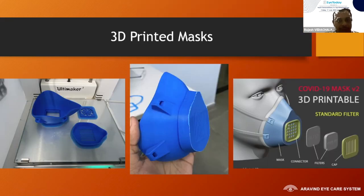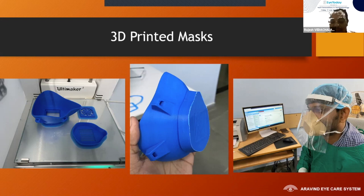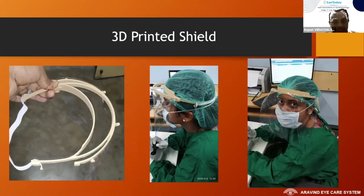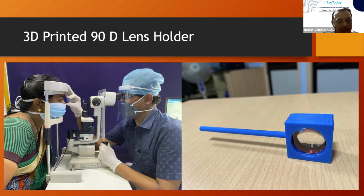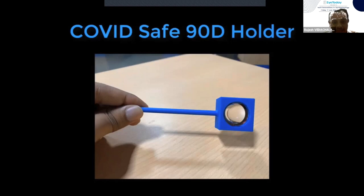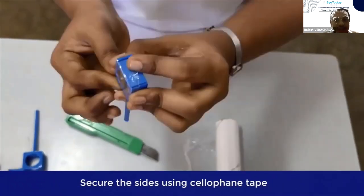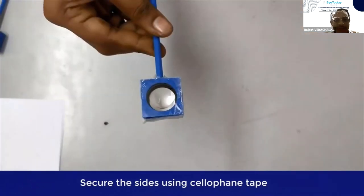Coming to COVID-time innovations: in the initial period during lockdown there was a scarcity of masks, so we 3D printed masks with a filter using either a normal mask filter or an N95 mask — it is as good as an N95 mask and has very good sealing. We also 3D printed face shields. Since all patients had to be examined with a mask, a lot of fog was generated while examining with a 90D holder. So we 3D printed a 90D holder that prevents touching the patient's mask and avoids fogging of the lens. We also wrapped the 90D holders with thin wraps so they can be easily cleaned, fogging is avoided, and the lens stays farther from the patient's eye.